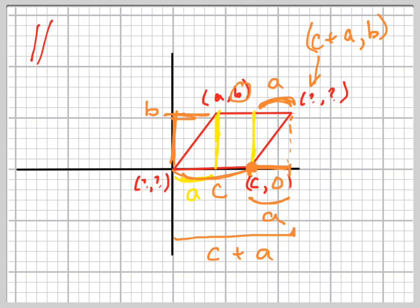No, C comma zero. Because remember, C is how far over left or right I go, and zero is how far up or down I go.